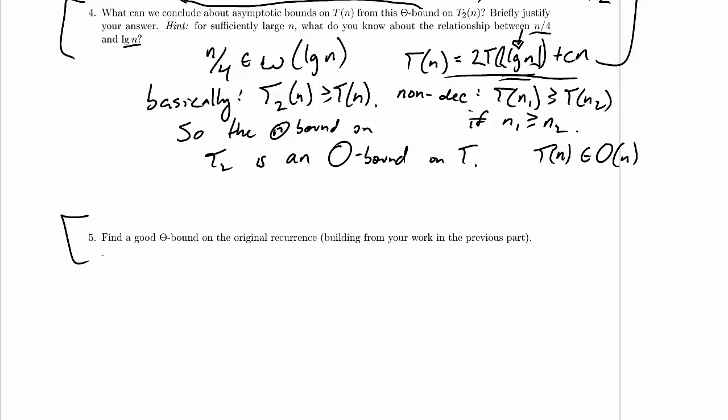Find a good theta bound on the original recurrence. The original recurrence looked in the recursive case like t of n equals 2t of log of n, 4 of log of n, plus c times n, and it had a base case that took constant time. So we're finding a good theta bound on the original recurrence building from the work in the previous part.